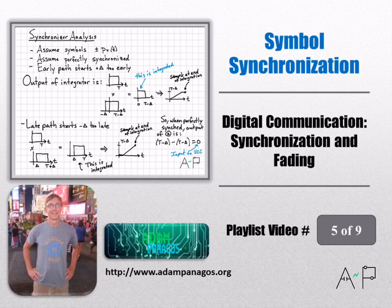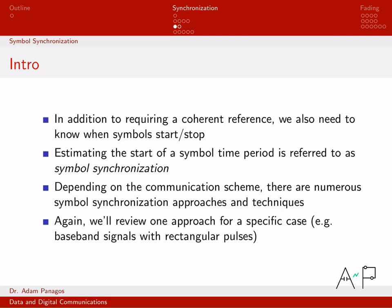The last few videos looked at carrier synchronization techniques for generating a cosine whose phase perfectly tracks the reference phase. Now let's look at symbol synchronization — the fact that in a digital communication system we need to know when symbols start and stop so we can do our correlation and integration correctly. We're going to look at one specific approach for baseband signals with rectangular pulses: the early gate late gate technique.